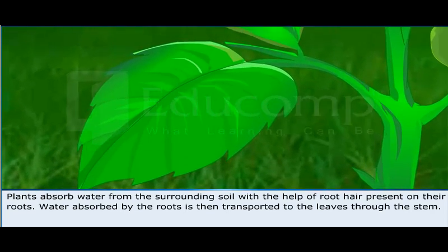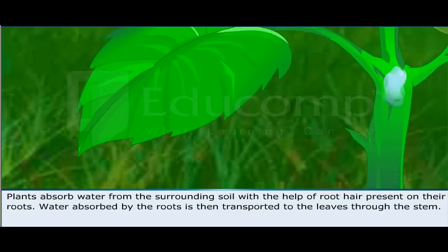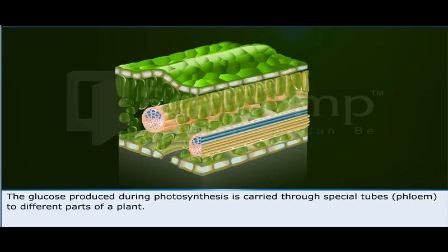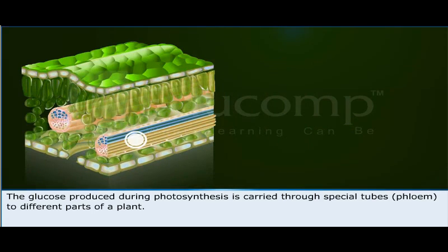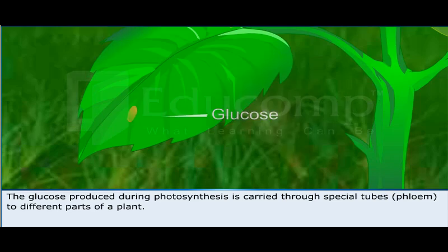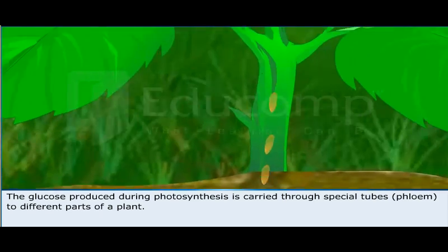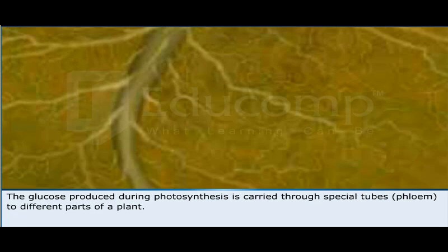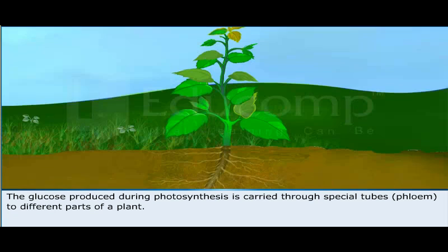Plants absorb water from the surrounding soil with the help of root hairs present on their roots. Water absorbed by the roots is then transported to the leaves through the stem. The glucose produced during photosynthesis is carried through special tubes to different parts of a plant.